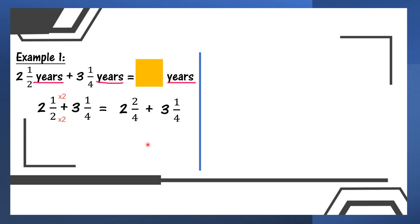And then plus 3 and 1/4. When I add up: whole number plus whole number — 2 plus 3, I get 5. And then numerator plus numerator — atas tambah atas — 2 plus 1 is 3 over 4. So done. This is the answer for example 1: 5 and 3/4 years.